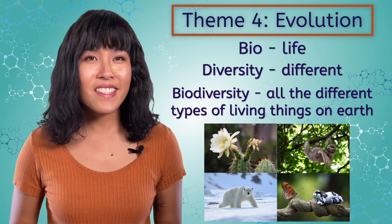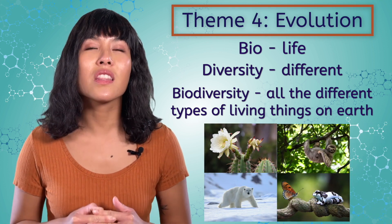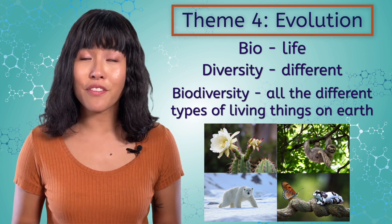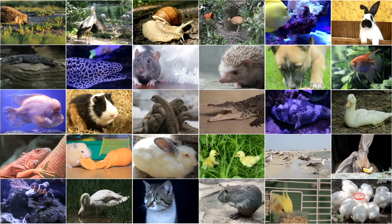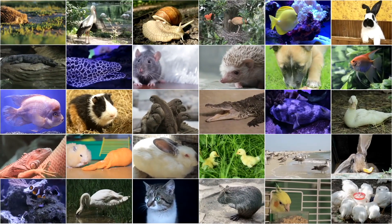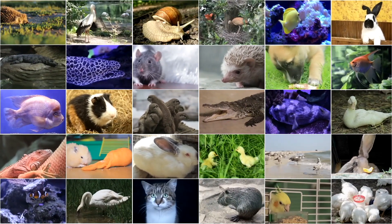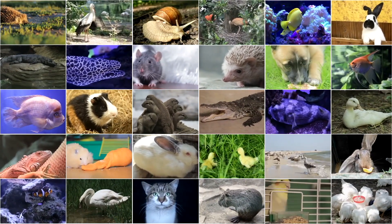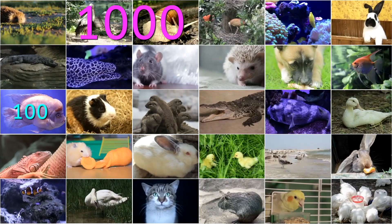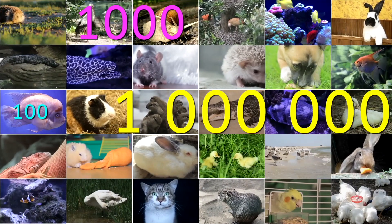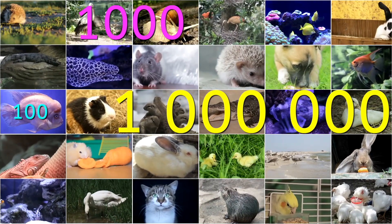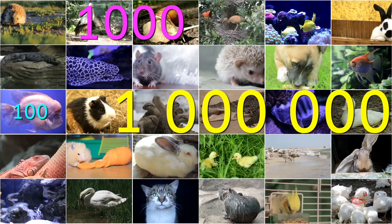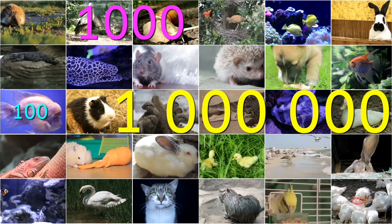In the last lesson, you saw lots of diversity when we looked at different types of biomes. How many different types of living things do you think you could find on Earth? One hundred? One thousand? One million? More? We'll find out what scientists say, but you can make your own guess.